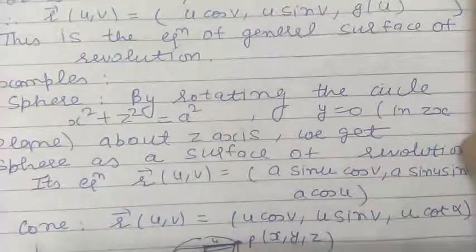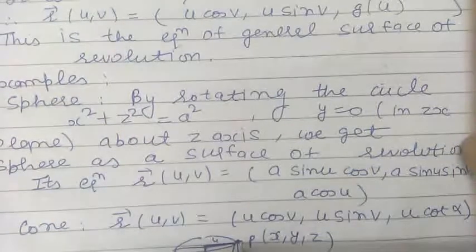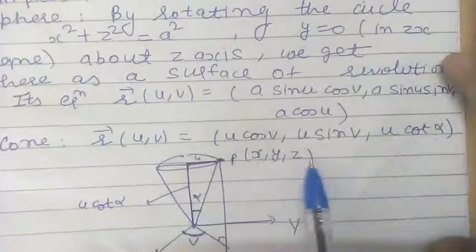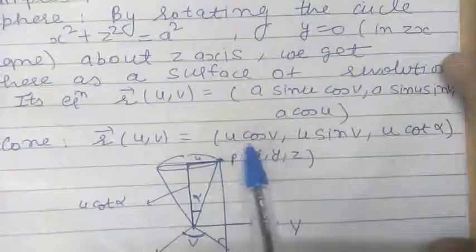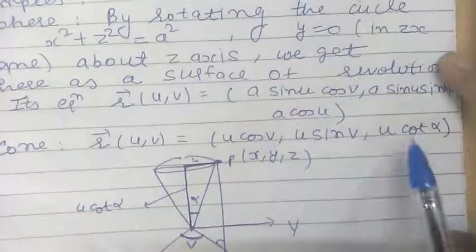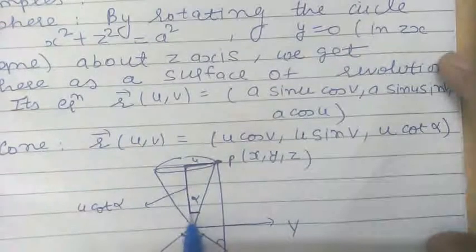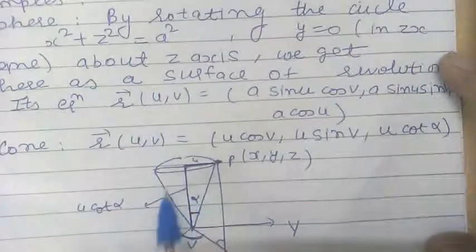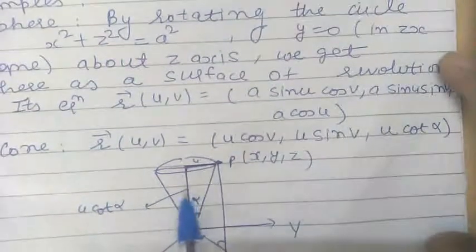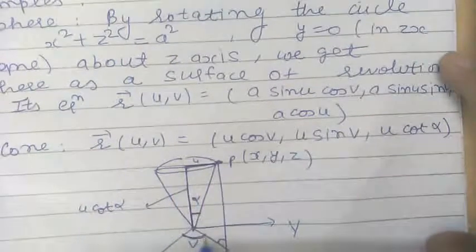In the same way, if we have the surface of revolution as a cone, the position vector of point P having coordinates x, y, z is given by x = u cos v, y = u sin v, and z = u cos α, where α is the angle shown in the figure. This u cos α can be obtained from the right angle triangle, and v is the angle shown.